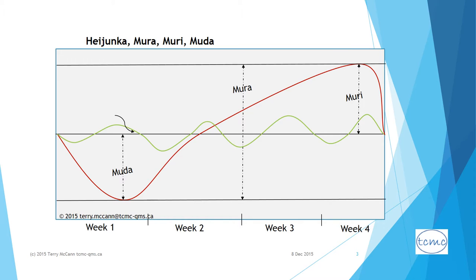In the second half of the month, all resources come under a lot of strain, particularly the workforce, as overtime becomes the order of the day — this is Muri. Muri also heightens risk for Muda. The green line shows how the application of Heijunka has a smoothing effect to dampen the impact firstly of Mura, and as a consequence reduce Muri and Muda.